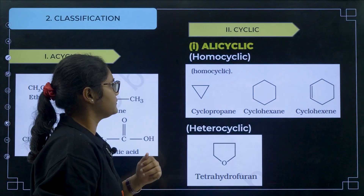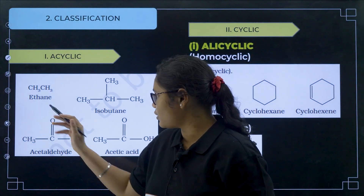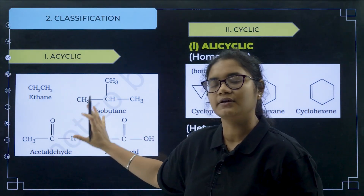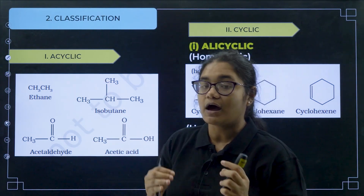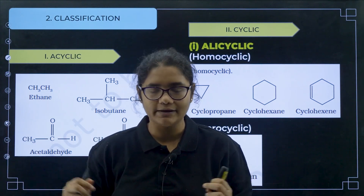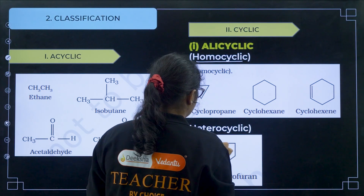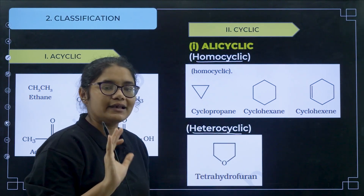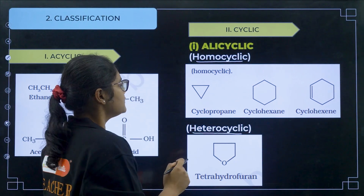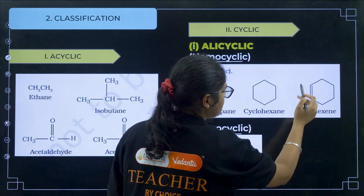Let us see the examples. First, acyclic means there is no cyclic structure — these all are open chain structures. There is no ring-like structure, so that is called acyclic. Now under cyclic, the first one is alicyclic and another is aromatic. Under alicyclic also, we have two categories: homocyclic and heterocyclic. Alicyclic means any cyclic structure — it should be a closed figure. You can see this is a closed figure, this is also a closed figure, this is also a closed figure.